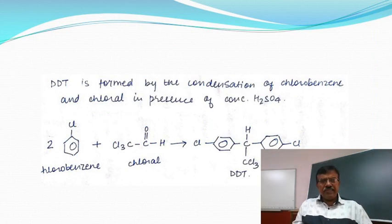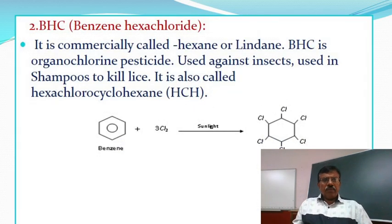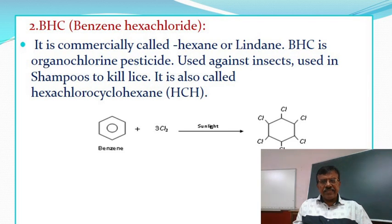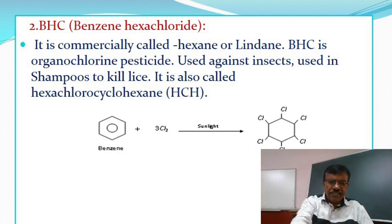DDT is formed by the condensation of chlorobenzene and chloral in the presence of concentrated sulfuric acid. Benzene hexachloride (BHC) is commonly called hexane or lindane, which is continuously used in coffee plantations as an insecticide. BHC is an organochlorine pesticide used against insects in agriculture. It is also called hexachlorocyclohexane. Benzene plus 3 Cl₂ in the presence of sunlight gives benzene hexachloride.